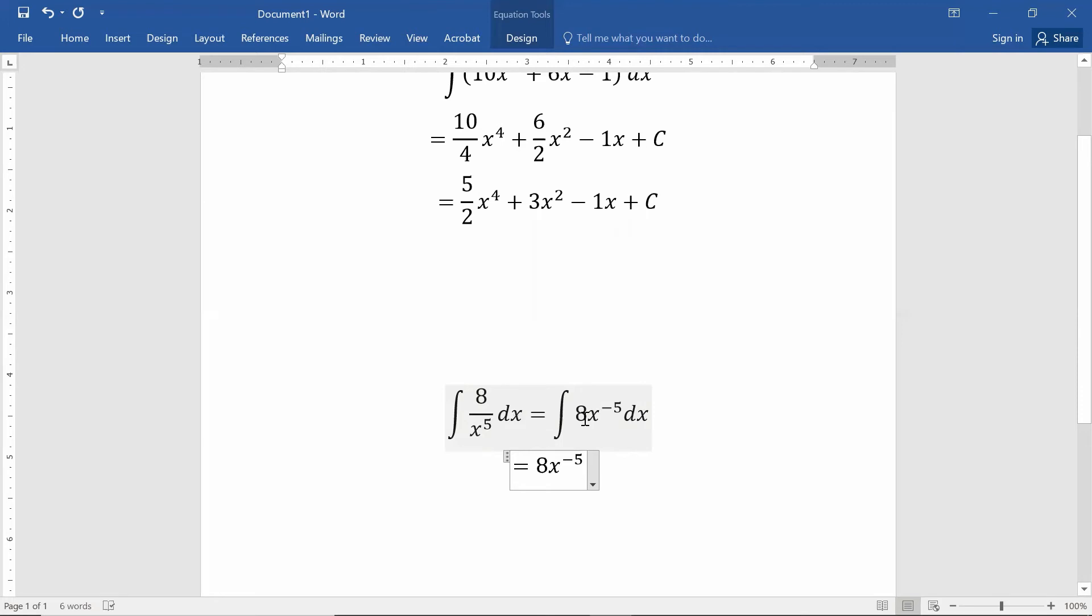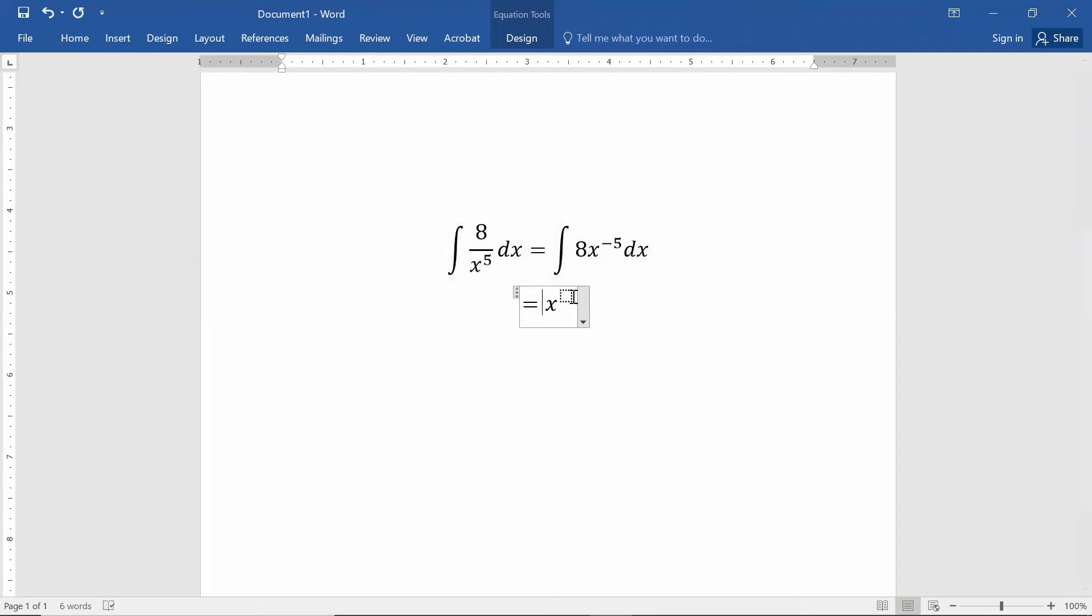In order to find the actual antiderivative after I do a rewrite, I'm going to raise the exponent by 1. If I raise -5 by 1, I get -4. The coefficient out front is going to be 8 divided by -4, and then we're going to have a +C tacked on at the end.